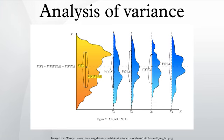A statistically significant result, when a probability is less than a threshold, justifies the rejection of the null hypothesis, but only if the a priori probability of the null hypothesis is not high.